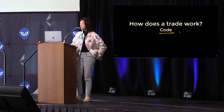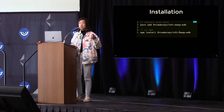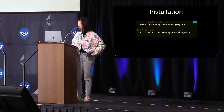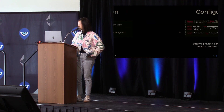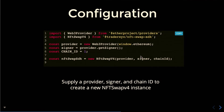How does it work in code? It's a very simple yarn or npm install for this package. Then we set up some configurations — we supply a provider, a signer, a chain ID — and create an instance of the NFTSwap v4.